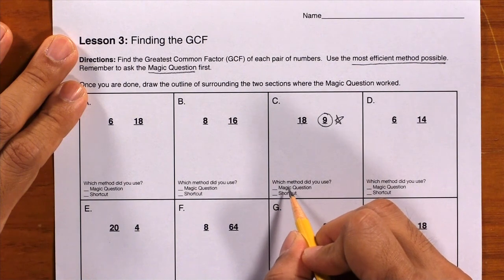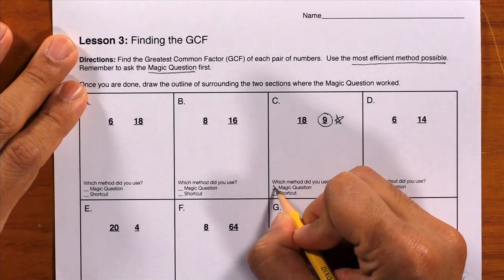On the bottom it asks which method did you use. We used the magic question, so we'll check that off.